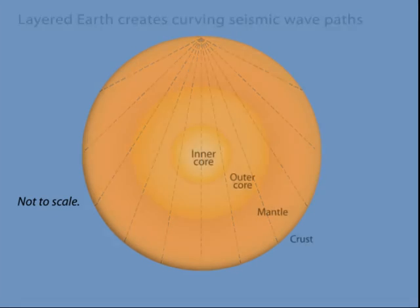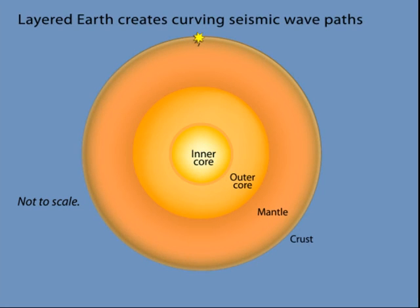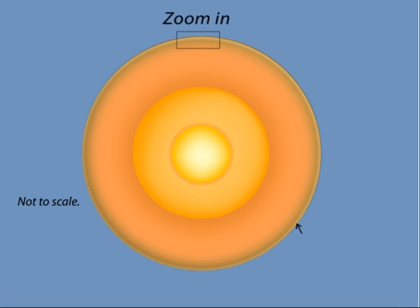But the Earth has composition, density, and temperature changes that cause the seismic rays to refract as velocity in the mantle generally increases with depth.